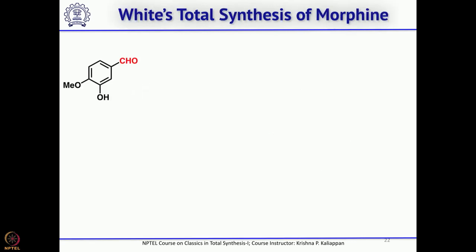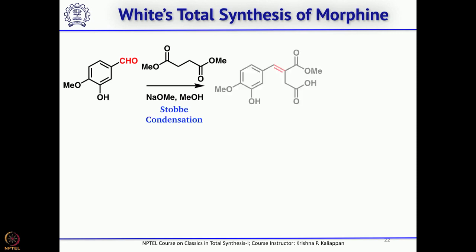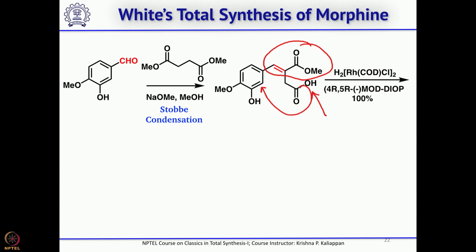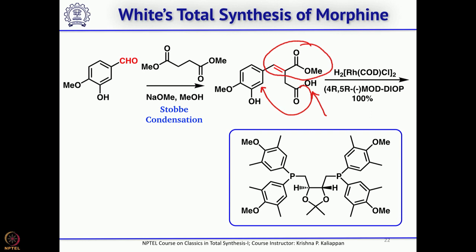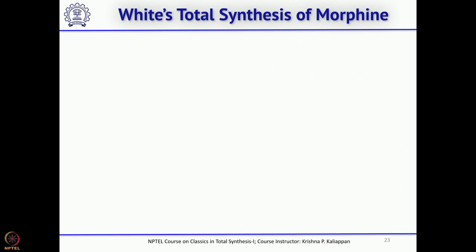White's group started with azovanillin and performed a Staudinger-type condensation with diethyl sodium ethoxide and dimethyl succinate to get an alpha,beta-unsaturated ester required for asymmetric hydrogenation. At the same time, you also have the CH₂CO group required for cyclization at this carbon. The asymmetric hydrogenation was done using a chiral rhodium catalyst with a complex ligand, giving this isomer in high enantiomeric excess.